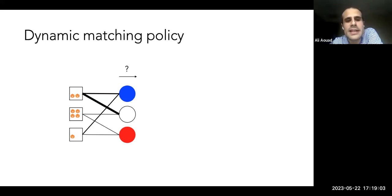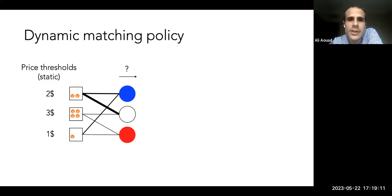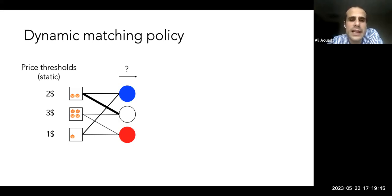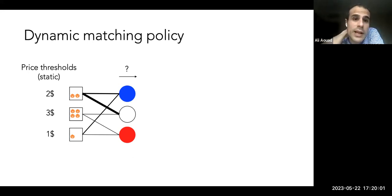Let me guide you through some key ideas. The policy space is not complicated — we still use static price thresholds. For every resource, there's an associated static price threshold that doesn't change during the horizon. Matching decisions are guided by these thresholds: we never assign a consumer to a resource where the reward is lower than the threshold. This is a safeguard against exhausting resources too quickly, reserving them for high-reward assignments.